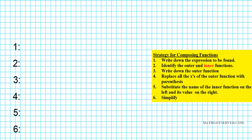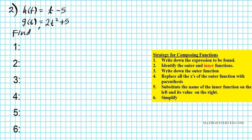Let's take a look at number 2. For problem 2, what if we have function h of t equal to t minus 5 and g of t equals 2t squared plus 5. What if we were to find h of g of t? So step one, we want to write down the expression that's to be found: h of g of t. We can clearly see that the outer function is h and the inner is g of t.